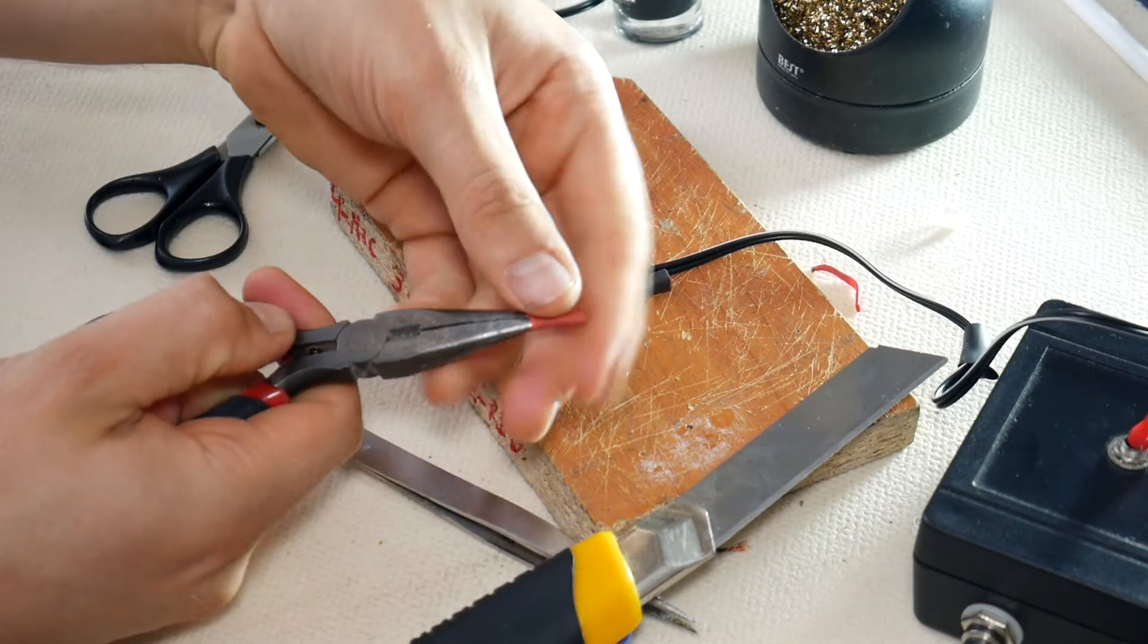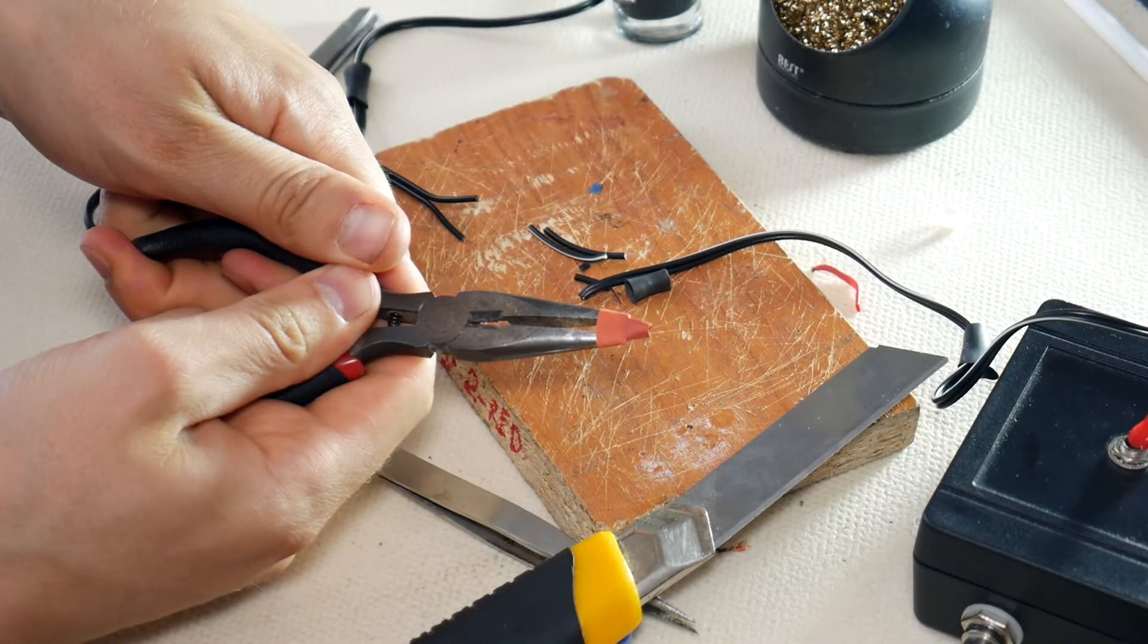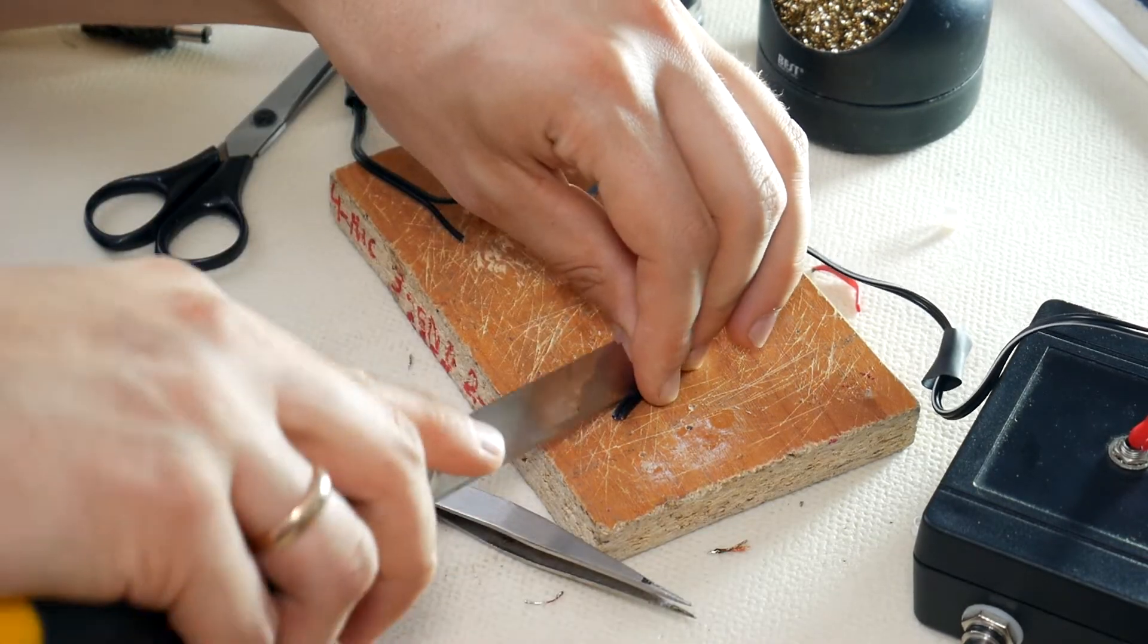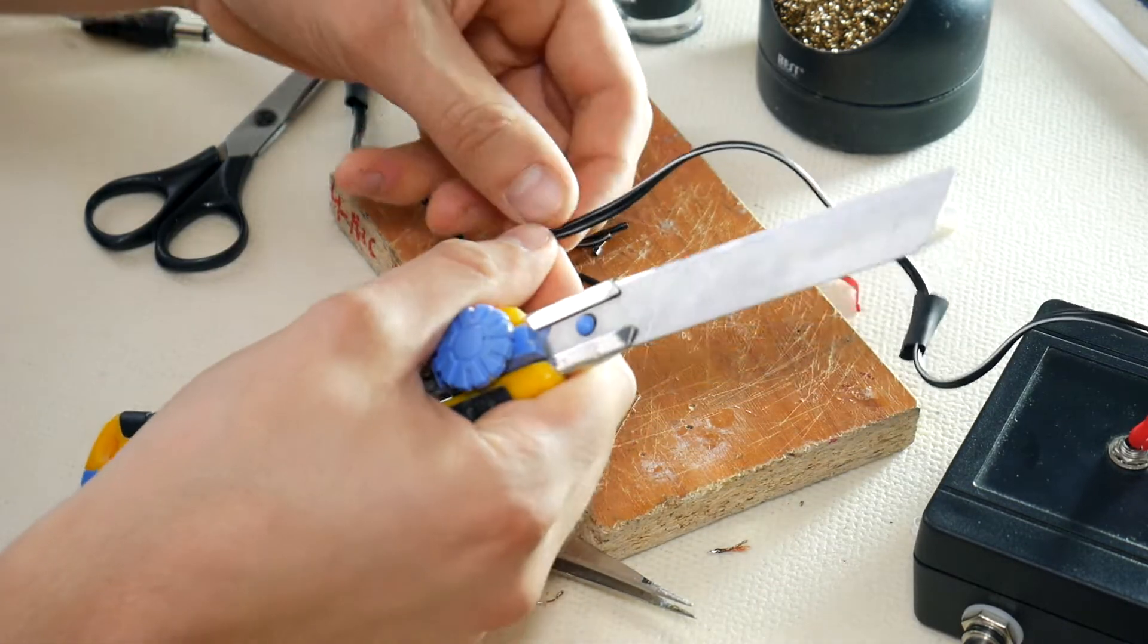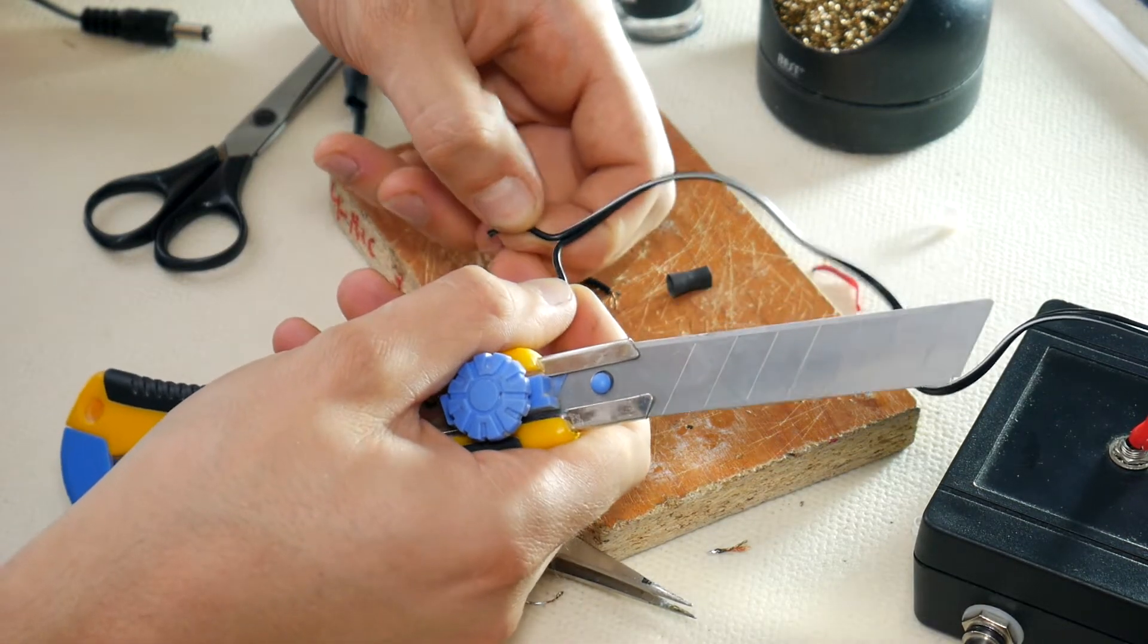Make another heat shrink tube a bit smaller in diameter to isolate the wire conductors. Then separate the cable cores from each other so we can remove the conductor insulation for soldering.